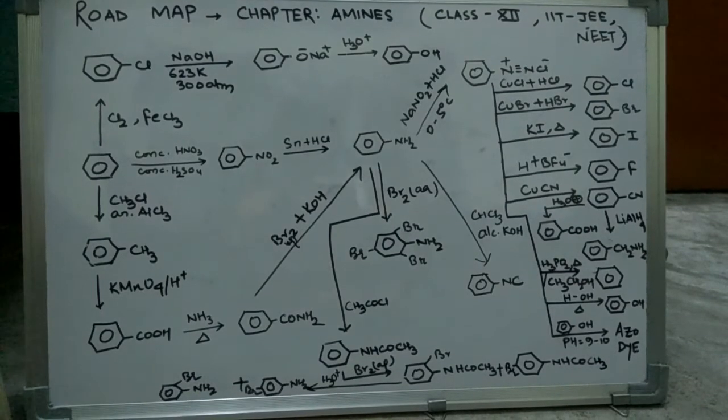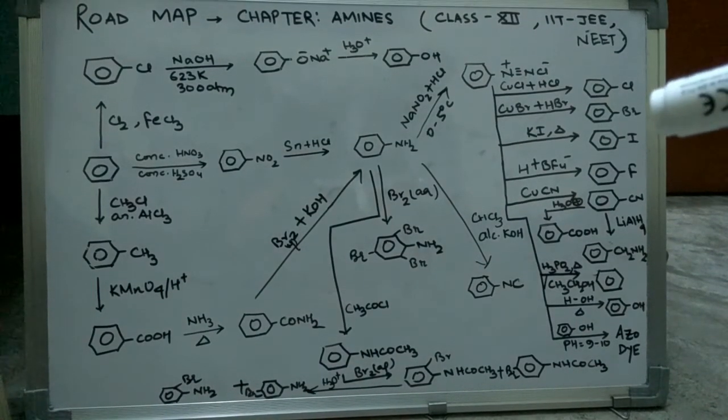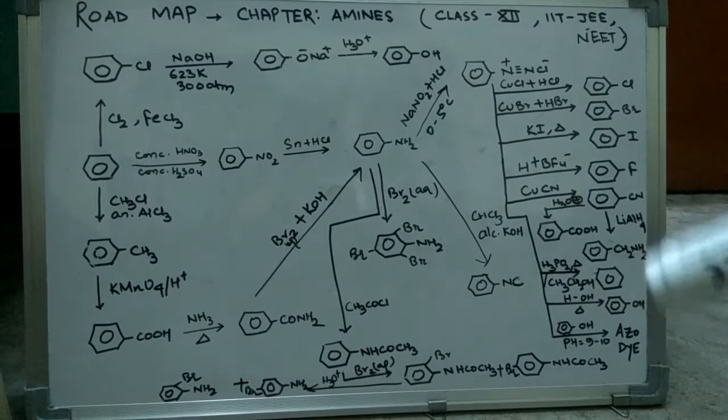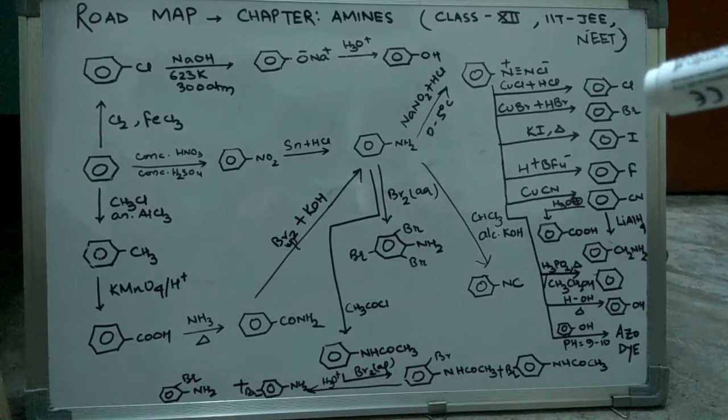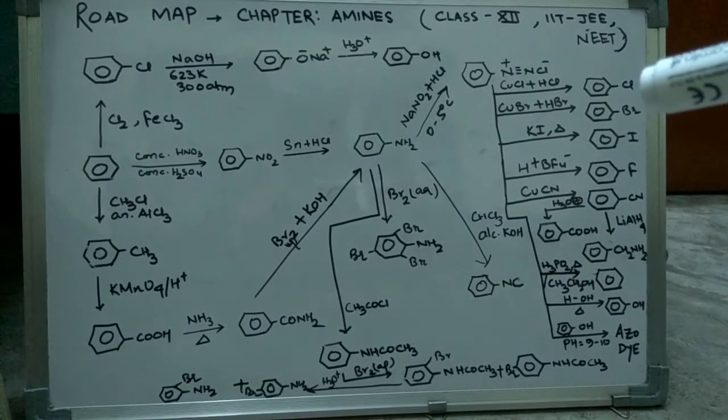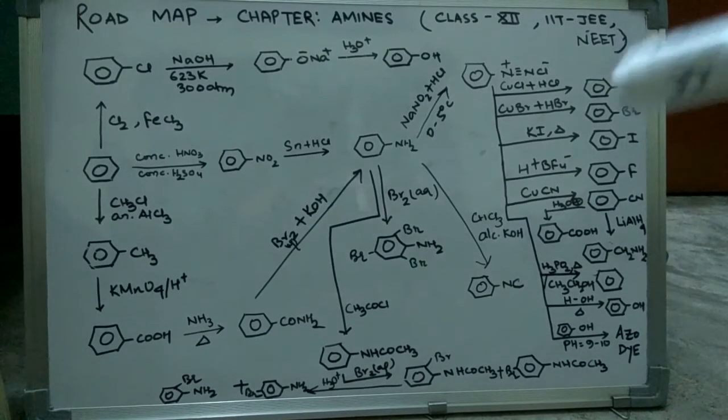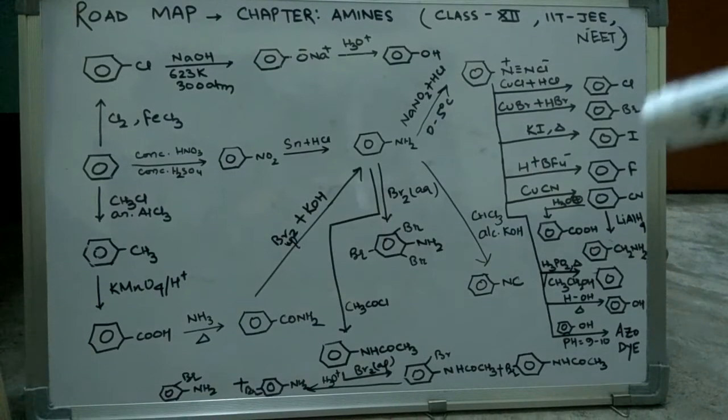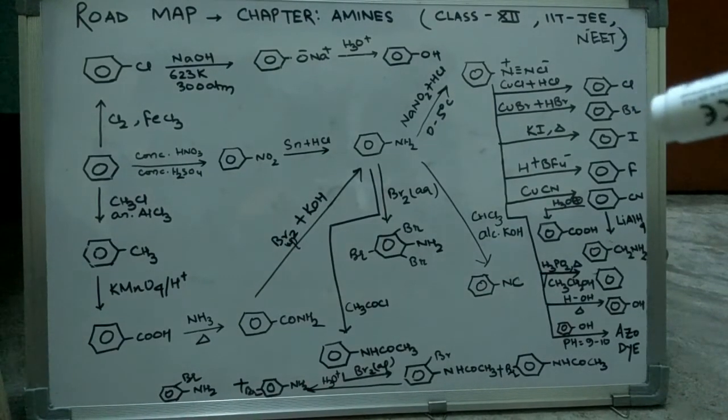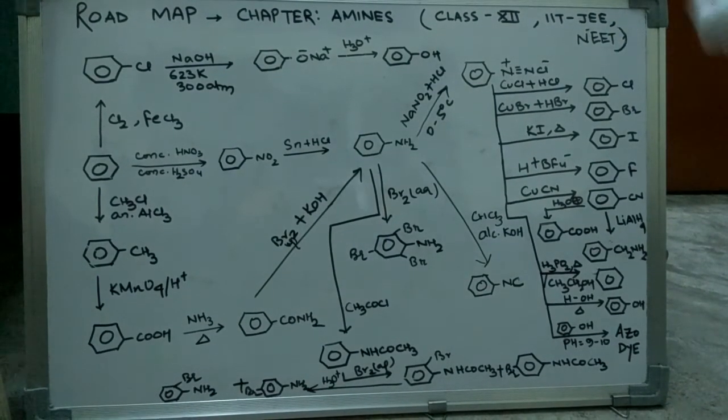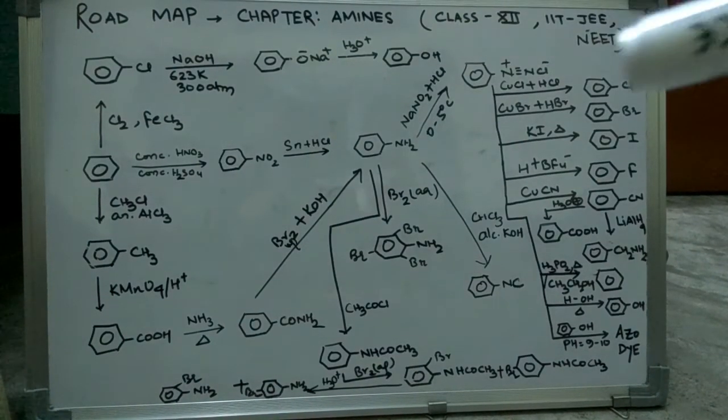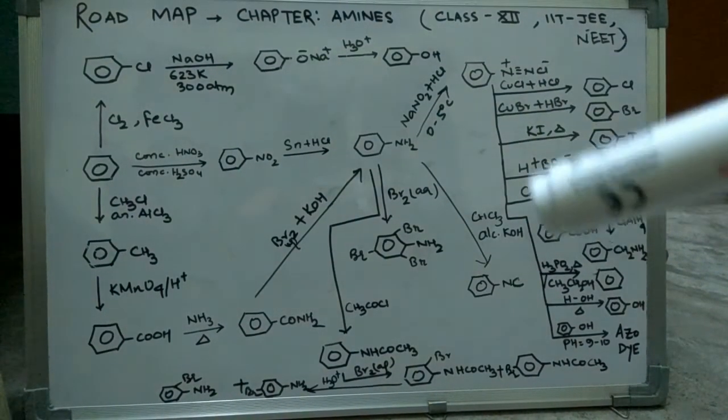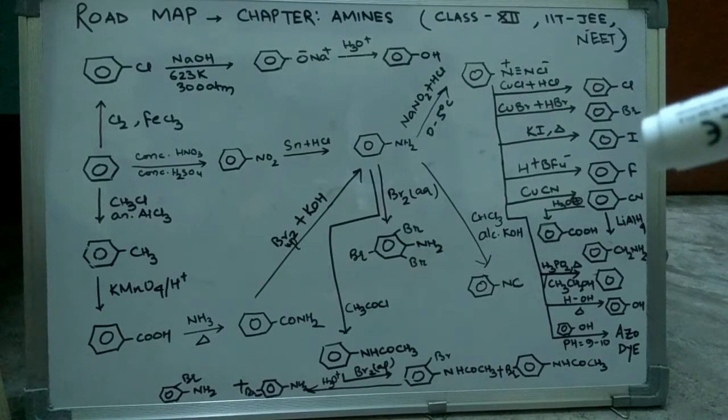Benzene diazonium chloride has a wide range of applications, as can be seen from these reactions. The first reaction is halogenation or chlorination. We have CuCl plus HCl, which gives us chlorine as the side group in place of the diazonium group. CuBr plus HBr also gives us Br.